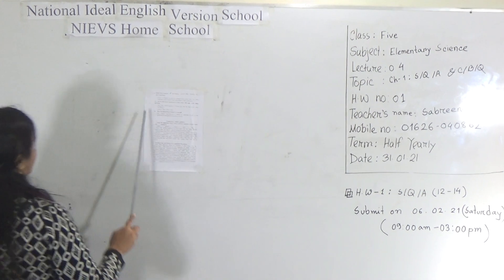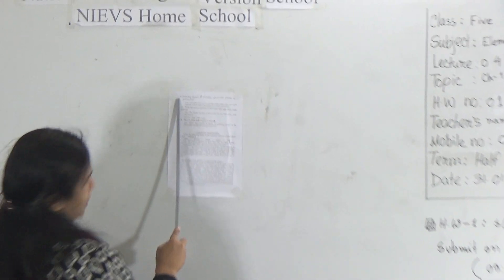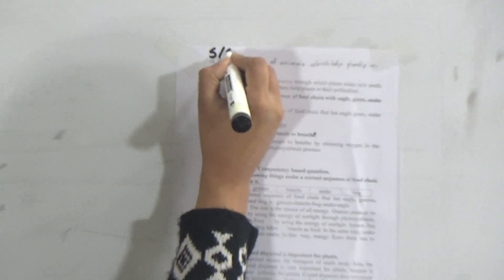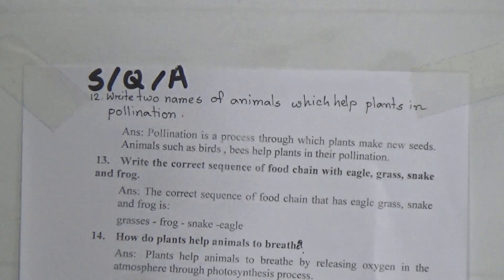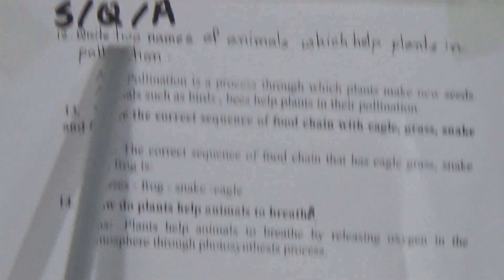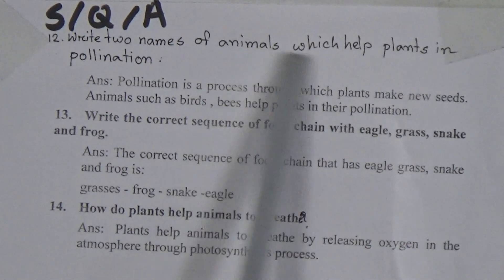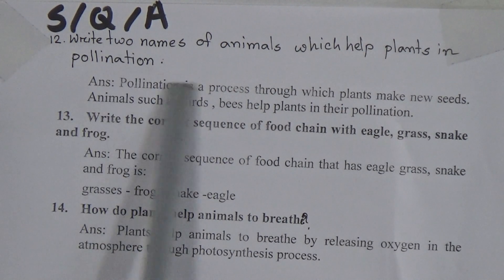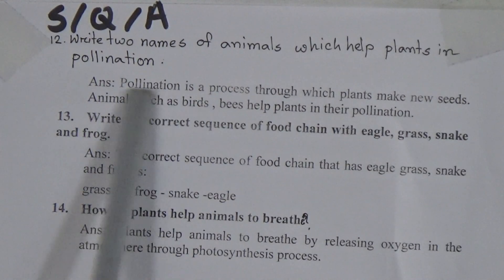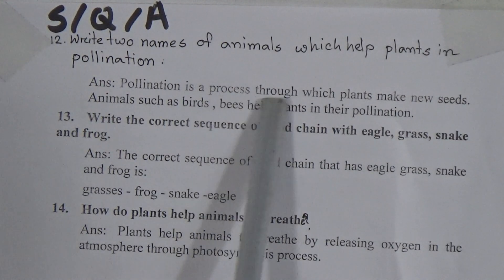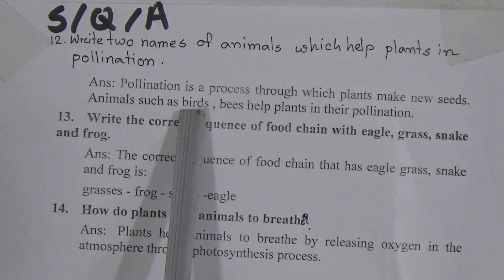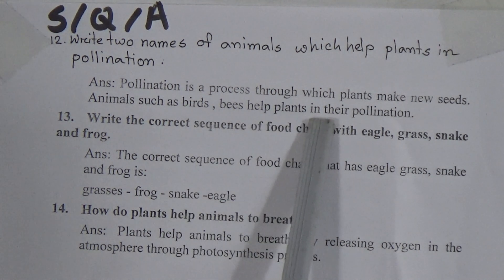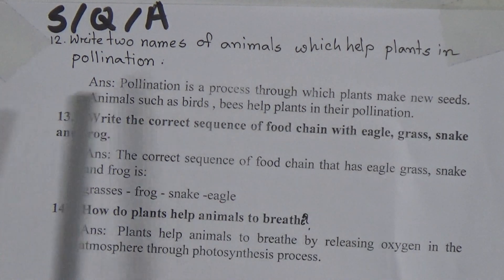Let us start our today's topic. The first short question answer is question number 12: Write two names of animals which help plants in pollination. The answer is: pollination is a process through which plants make new seeds. Animals such as birds and bees help plants in their pollination.